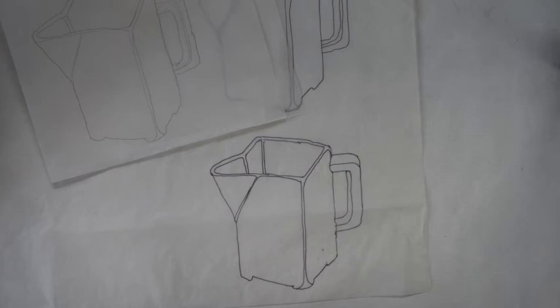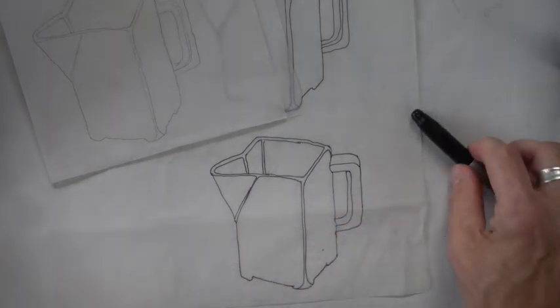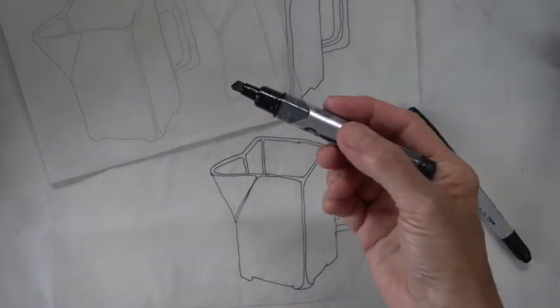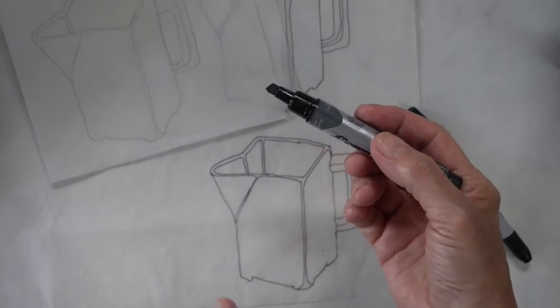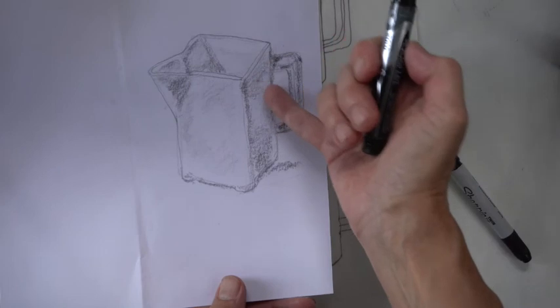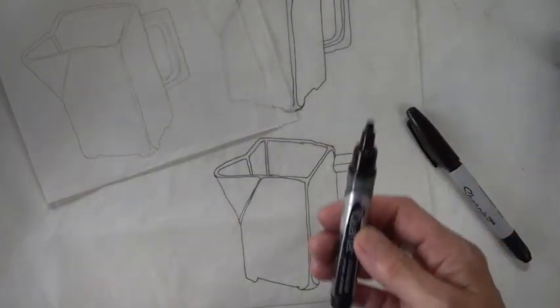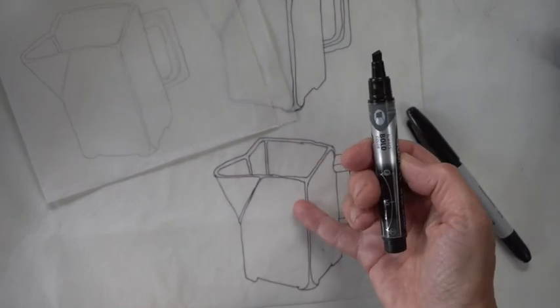And then you're also going to do another rendering where you use shading and probably a wider marker to do some shading. So you're going to be looking for contrast, right? Only highlights and only shadows. And going back to your observational drawing, you'll see where the shadows were. And you can translate those in marker to a variation drawing.